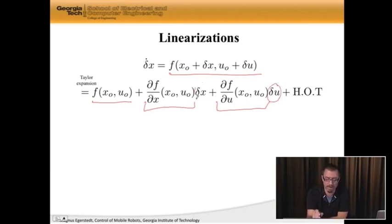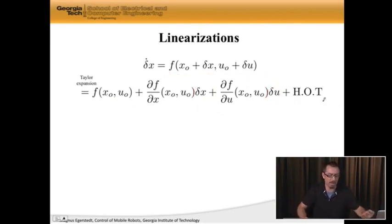And then I have something that I call HOT, which stands for higher order terms. So this is where we're saying that the higher order terms, where when delta x and delta u become large, these matter. But for small delta x and delta u, they really don't matter.